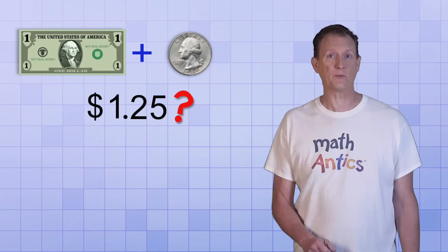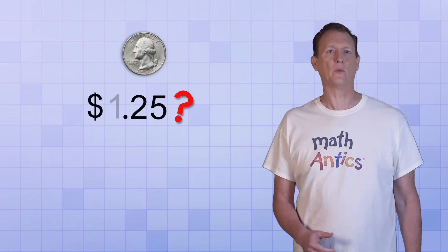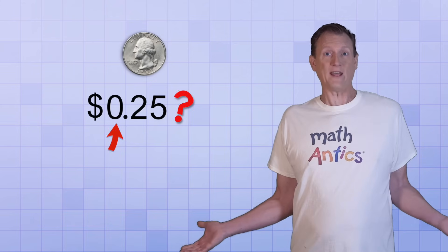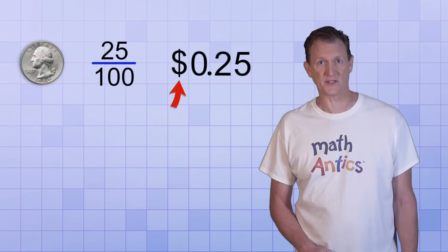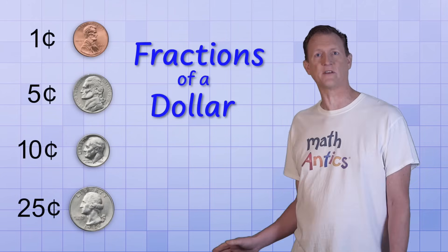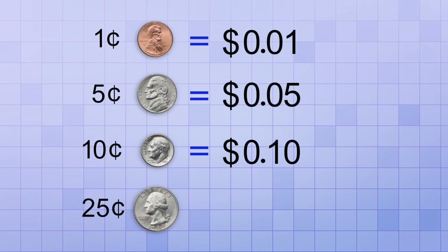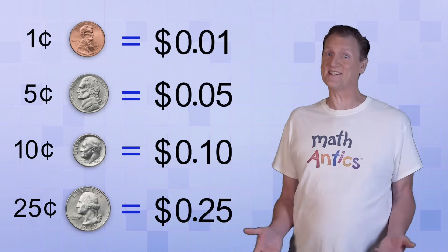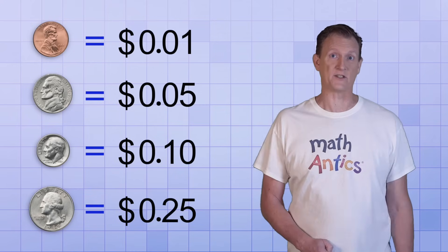If we subtract the one dollar and leave the quarter by itself, we replace the one in the ones place with a zero. Since a quarter is twenty-five one-hundredths of a dollar, you can write it as zero point two-five dollars. In fact, instead of using the cent sign, you can represent the values of all four coins in terms of fractions of a dollar: one penny equals zero point zero one dollars, one nickel equals zero point zero five dollars, one dime equals zero point one zero dollars, and one quarter equals zero point two five dollars. Because of this, the cent sign isn't used all that often — you'll almost always see cents written as fractions of dollars.